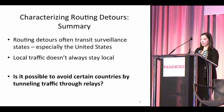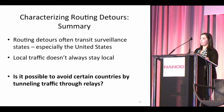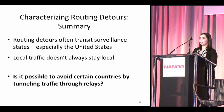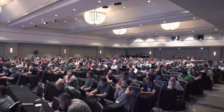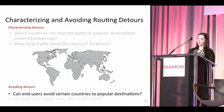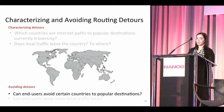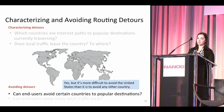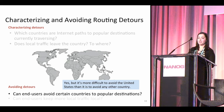To summarize these routing detours: routing detours often transit surveillance states, especially the United States. Local traffic doesn't always stay local, and it also tends to transit surveillance states. So what can clients do? Is it possible to avoid certain countries like surveillance states, and can we do this by tunneling traffic through relays?